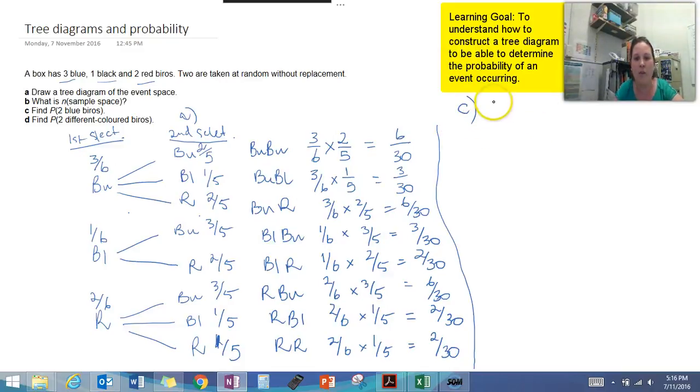So first one, find the probability of getting two blue biros. So let's go back to our tree diagram. This is the only one that starts with blue and blue. So blue blue was equal to six over thirty. So we can just get that straight from the information we've already calculated there. So the probability of getting two blues is six over thirty.